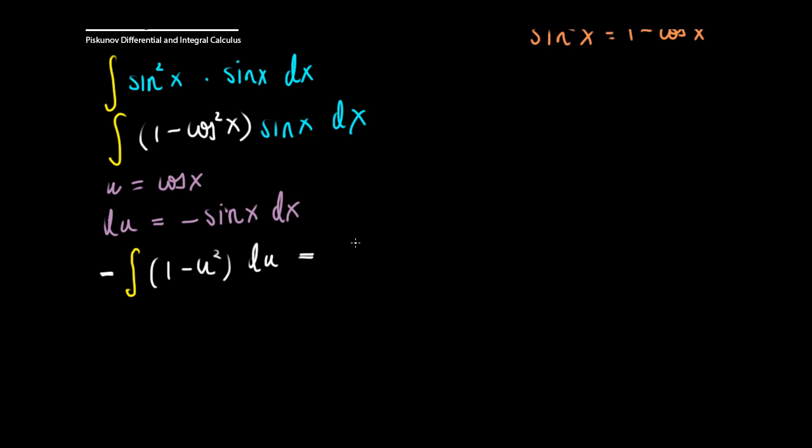If I bring the negative inside, this becomes the integral of u squared minus 1 du.